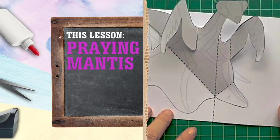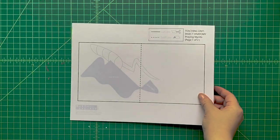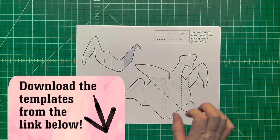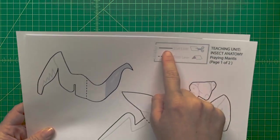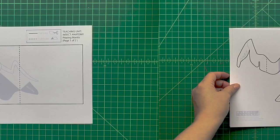First, what you're going to need to do is download the templates below. You can print them out onto any color cardstock you like. You're going to see two types of lines: a dotted line and a solid black line.